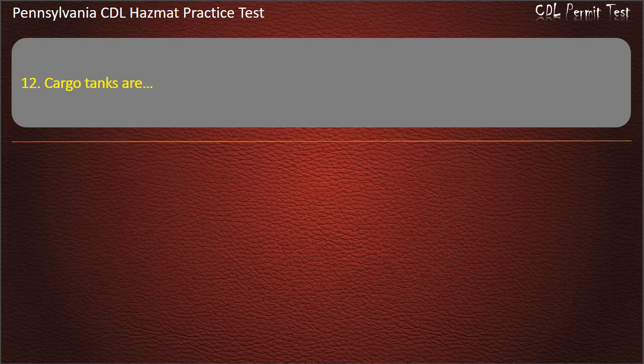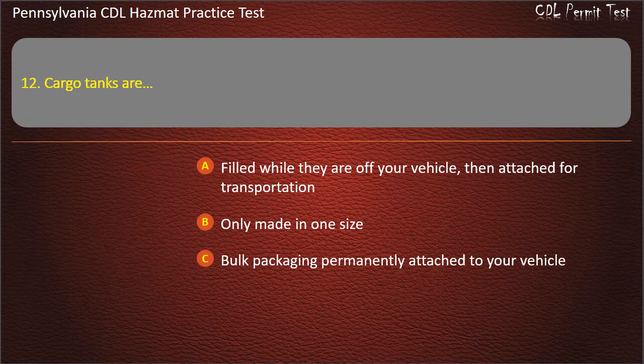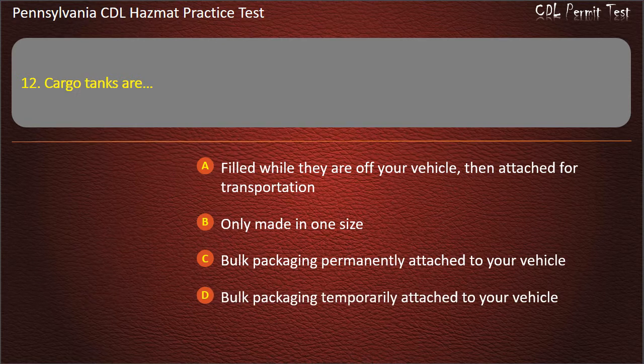Question 12. Cargo tanks are: Filled while they are off your vehicle, then attached for transportation; Only made in one size; Bulk packaging permanently attached to your vehicle; Bulk packaging temporarily attached to your vehicle. Answer: Bulk packaging permanently attached to your vehicle.